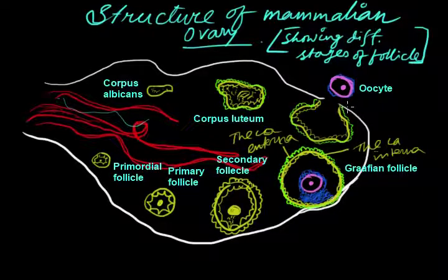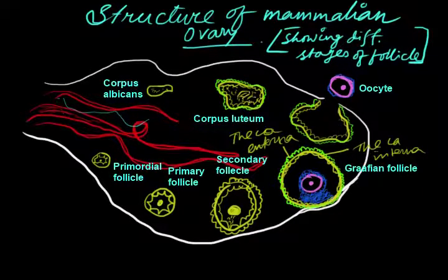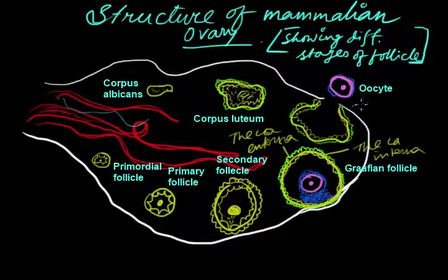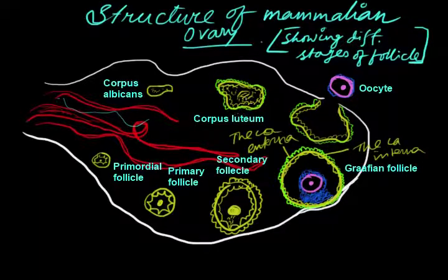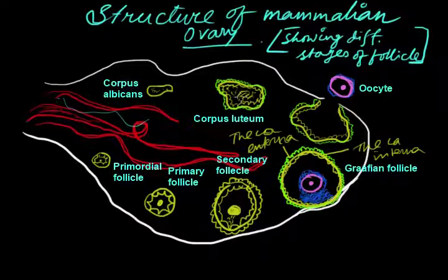This is the point of ovulation where the oocyte is released from the mature follicle. And this is the scar tissue formed after ovulation. The scar tissue is known as corpus luteum. This is a temporary endocrine gland and it has several important functions which we will discuss later on.